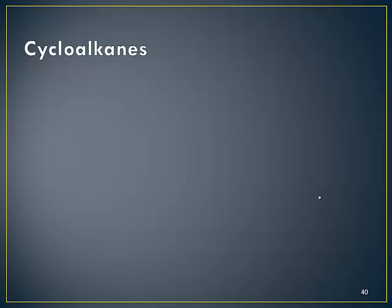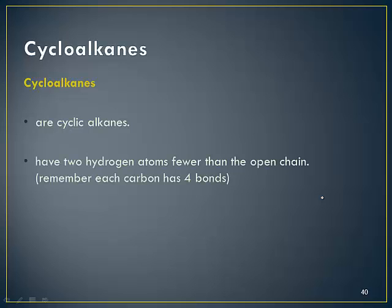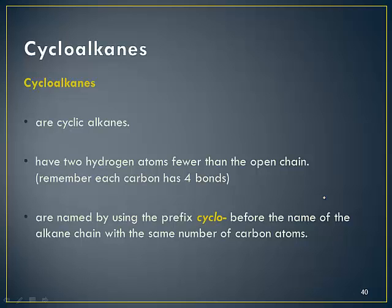The other thing I want to talk about is cycloalkanes. An alkane has only single bonds, but if it's a cyclic group, we end up having a chain which doesn't end. So you have two hydrogen atoms fewer than in an open chain, because there is no terminal carbon to have three bonds between carbon and hydrogen. They are named using the prefix cyclo- before the name of the alkane to show that it is a cyclic compound.